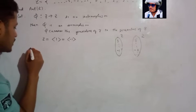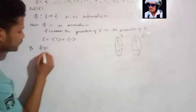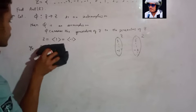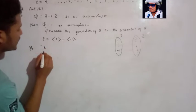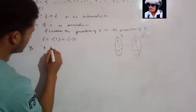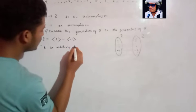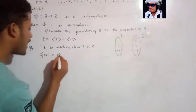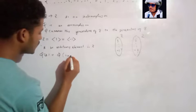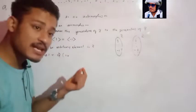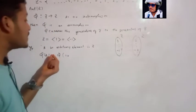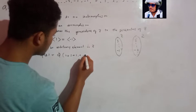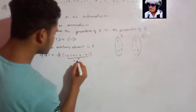Now, if we take pi of k, where k is an arbitrary element of Z, then pi of k is equal to pi of (1 + 1 + 1 + ... + 1), k times. Because the elements of Z are generated by 1, so any element k can be written as 1 added k times.